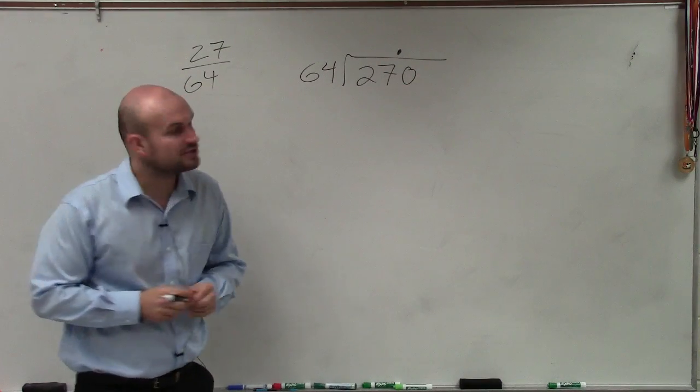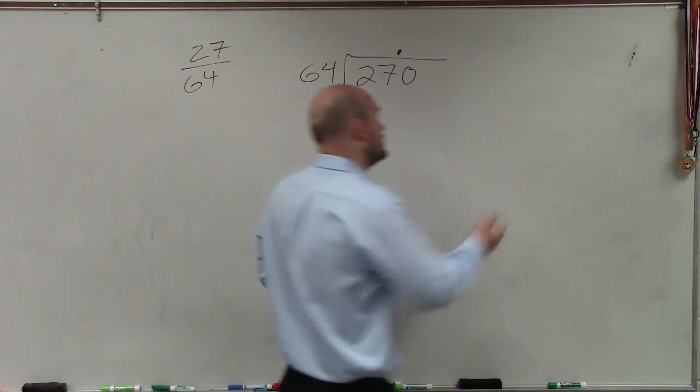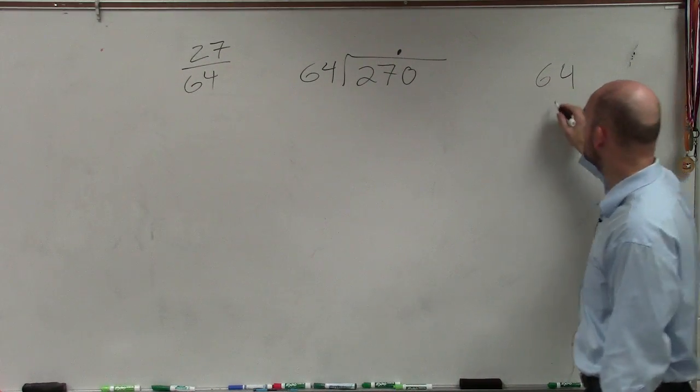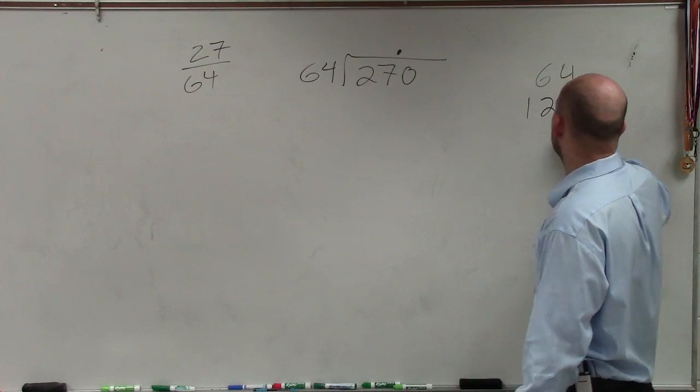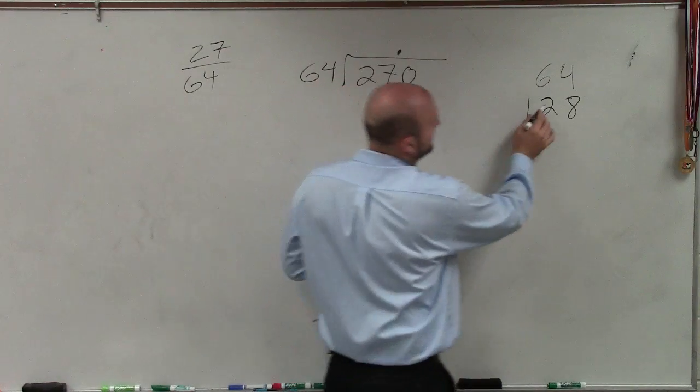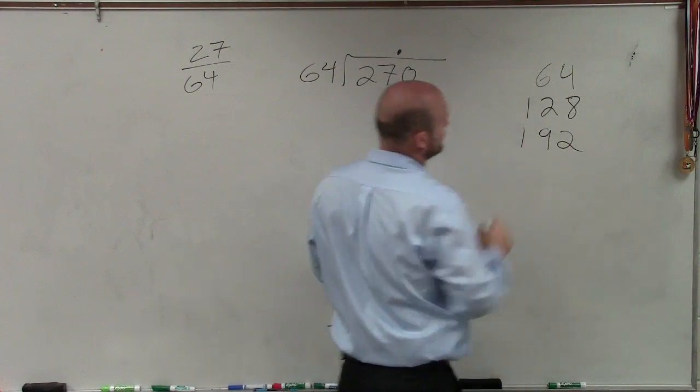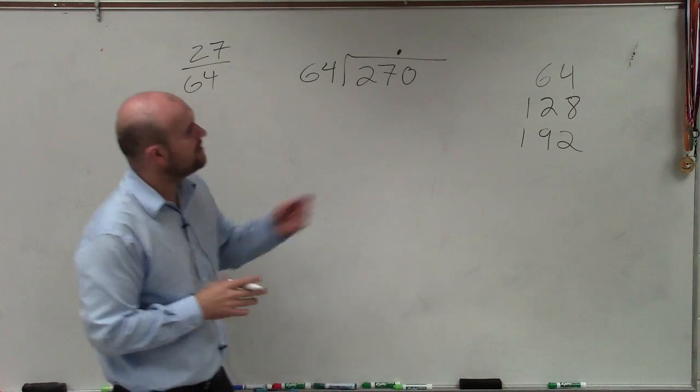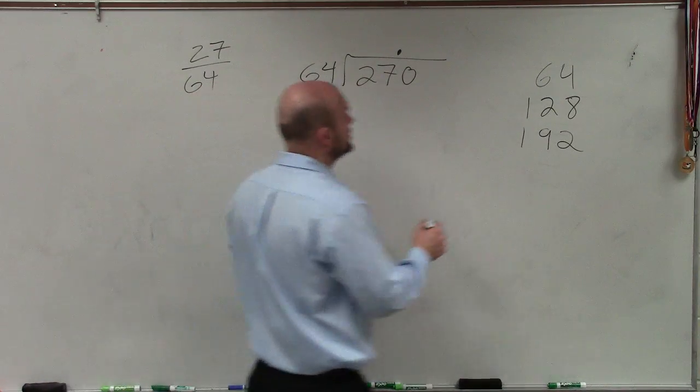So does 64 go into 270? Of course it does. How many times? Well, if you don't know, just add up multiples of 64. 64 plus 64, the next one would be 128. Add another 64 would be 192. And then add another one, which would be 256.